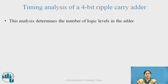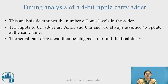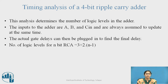This analysis determines the number of logic levels in the adder. The inputs to the adder — A, B, and CIN — are always assumed to update at the same time. The actual gate delays can then be plugged in to find the final delay. The number of logic levels for an n-bit RCA is equal to 3 + 2×(n−1).